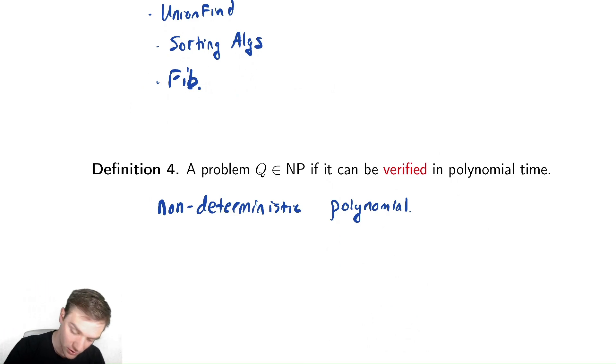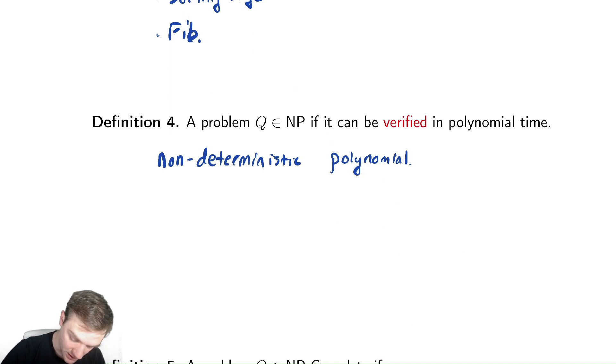Problems that are in NP are some that we just looked at, which are the satisfiability problem, which we call SAT. There's the Hamiltonian path problem. There's the traveling salesman problem. There are some other ones we'll look at in these lectures.